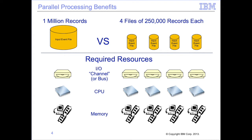If, for example, our computer only has 1 CPU, then each file will effectively be processed serially, no matter how many files we have. All parallel processing is resource-constrained in some way.